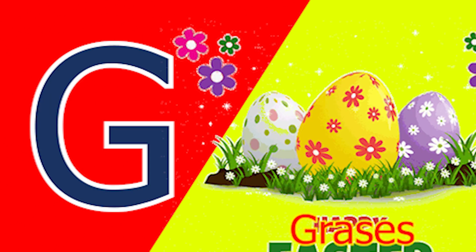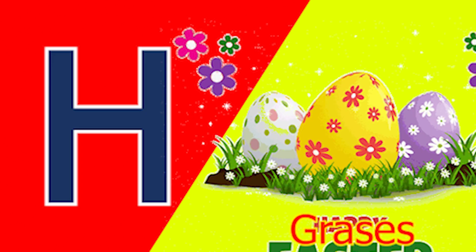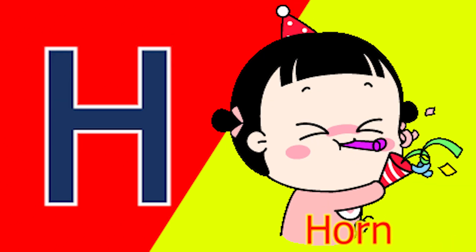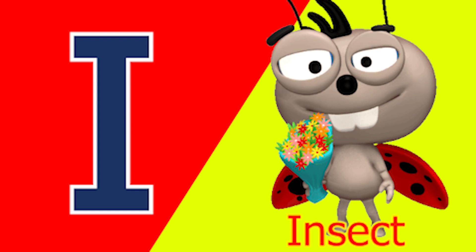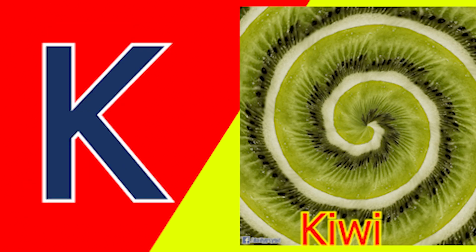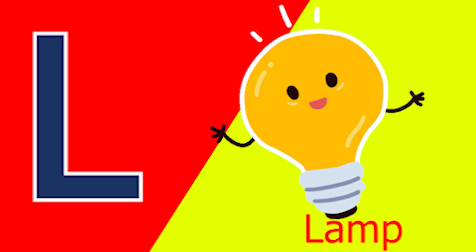G for glass and H for horn. I for insect, J for jam, K for kite, L for lamb.